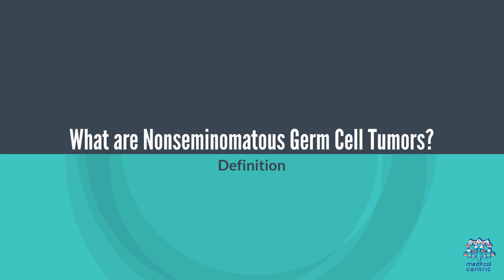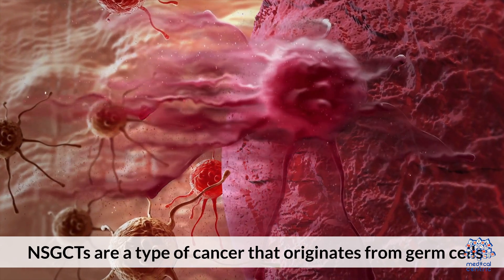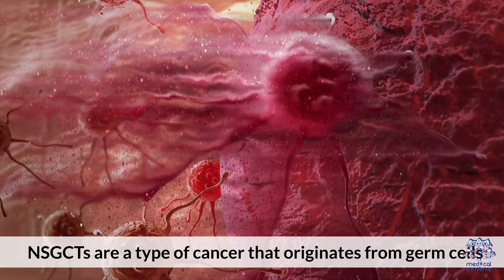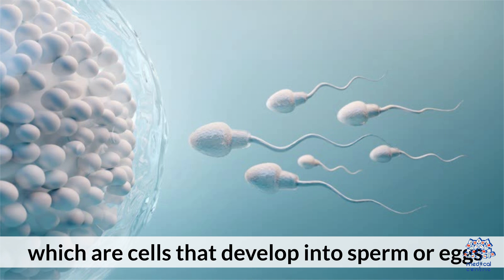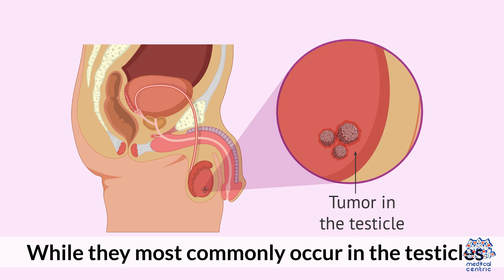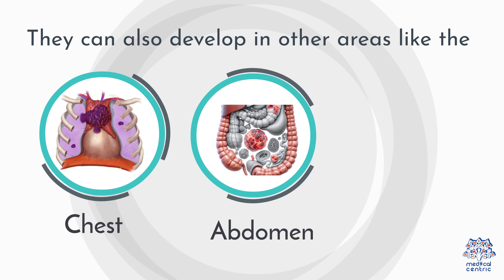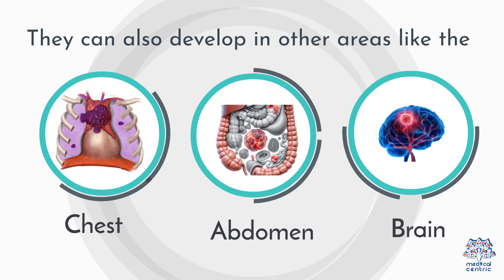What are Non-Seminomatous Germ Cell Tumors? Definition: NSGCTs are a type of cancer that originates from germ cells, which are cells that develop into sperm or eggs. Location: While they most commonly occur in the testicles, they can also develop in other areas like the chest, abdomen, or brain.